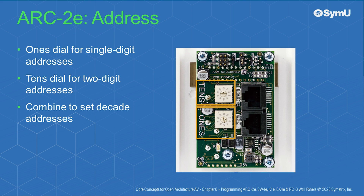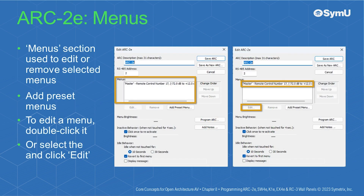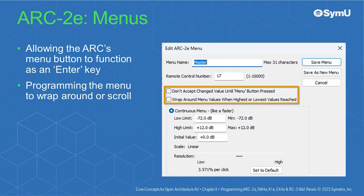The menu section of the Edit Arc2E window is used to edit or remove selected menus and add preset menus. To edit a menu, double-click the desired menu, or select the menu and click the Edit button. This section of the Edit Arc2E menu is used for allowing the Arc's menu button to function as an enter key, as well as programming the menu to wrap around or scroll between the available items.